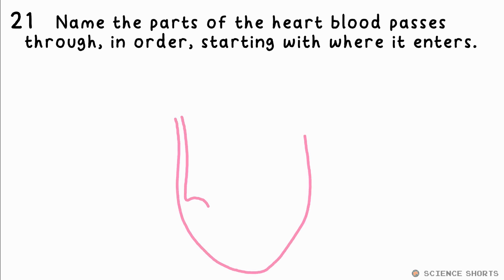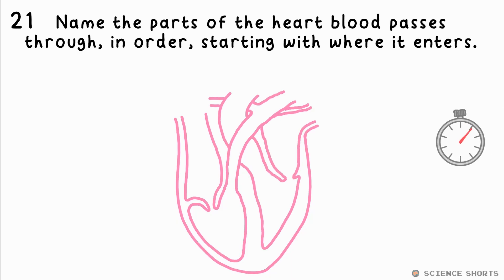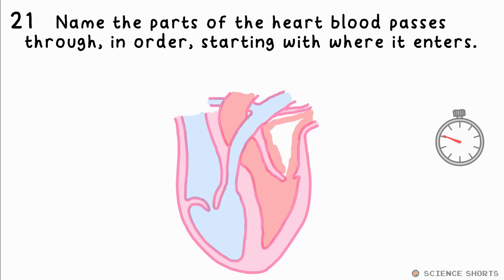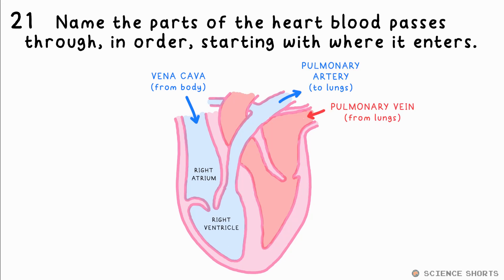Question 21. Name the parts of the heart blood passes through in order, starting from where it enters. It enters through the main vein, the vena cava, then it goes to the right atrium, right ventricle, pulmonary artery to the lungs, then back through the pulmonary vein, to the left atrium, then to the left ventricle, and out through the aorta — the main artery — to the rest of the body.